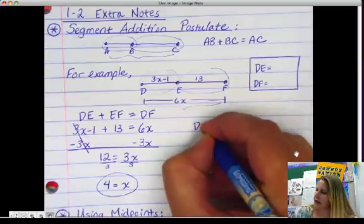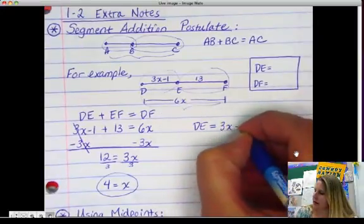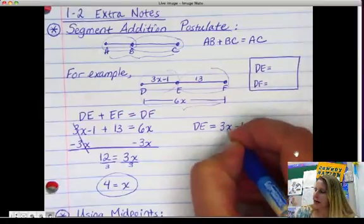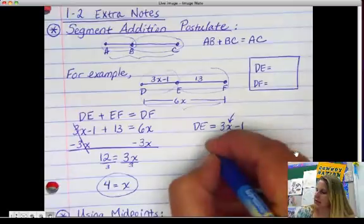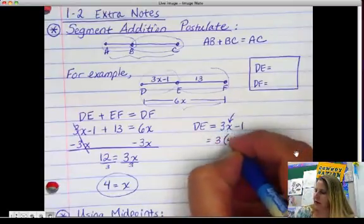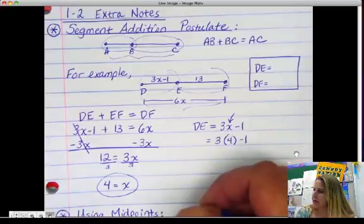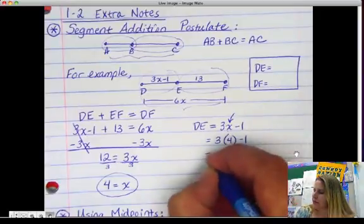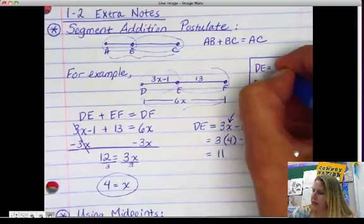So what we need to do is take our 4 and plug it back into what DE is. Remember, DE is 3x minus 1. So we need to take our 4 and plug it in to our x, because 4 is x. So that's 3 times 4 minus 1, 12 minus 1, which is 11. So DE is 11.